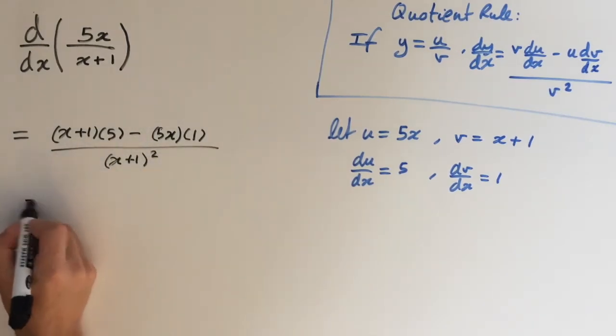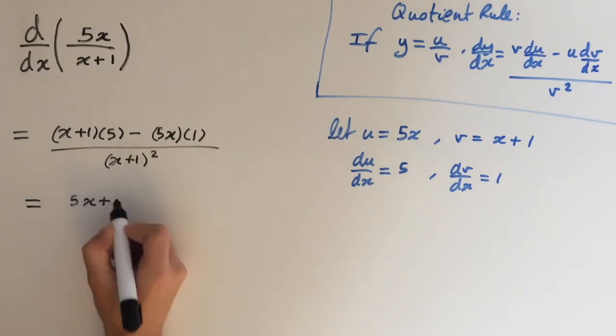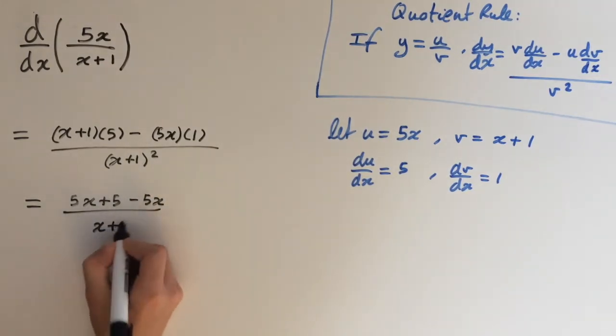So we can simplify the top of the fraction. This is going to give us 5x plus 5, minus 5x, all over x plus 1 squared.